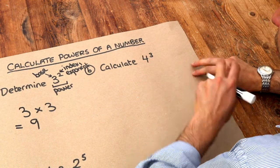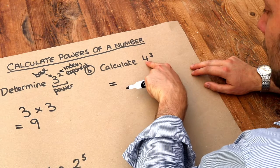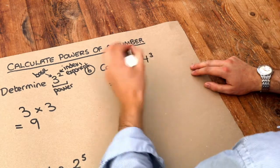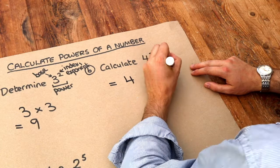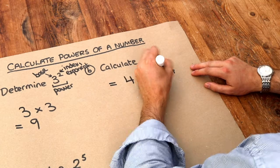I've got 4 to the power of 3. And that means I write the number 4 out 3 times. So 4 out 3 times. And then we multiply those together.